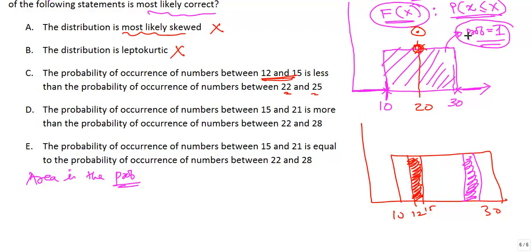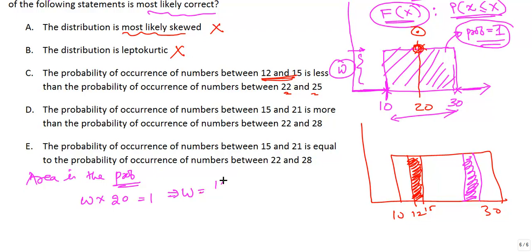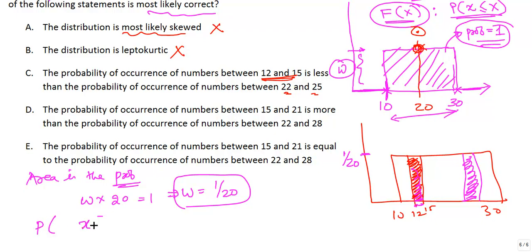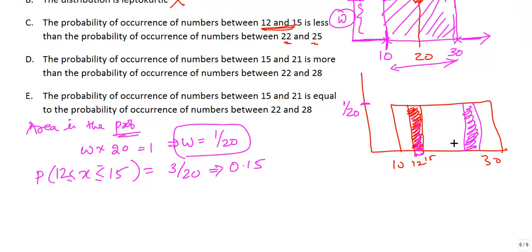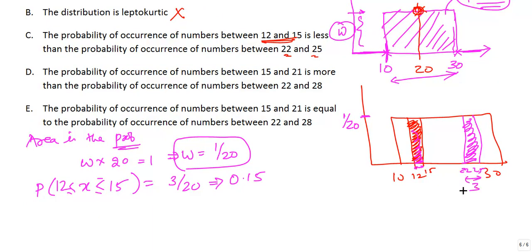The total area of the rectangle equals 1. Let's call the height W. So W times the width (30 minus 10 = 20) equals 1, which means W equals 1/20. The area between 12 and 15 has a distance of 3, so the probability is 3 times 1/20 = 3/20 = 0.15. Similarly, the distance between 22 and 25 is also 3, so that probability is also 3/20 = 0.15.